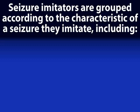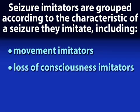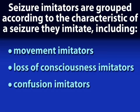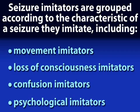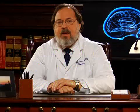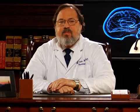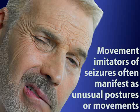These imitators can be grouped according to the characteristic of a seizure that they impersonate. They include movement imitators, loss of consciousness imitators, confusion imitators, and psychological imitators. Each of these imitators may cause a symptom that looks like a seizure in some way, but they do not show the EEG changes in the brain that are characteristic of an epileptic seizure.